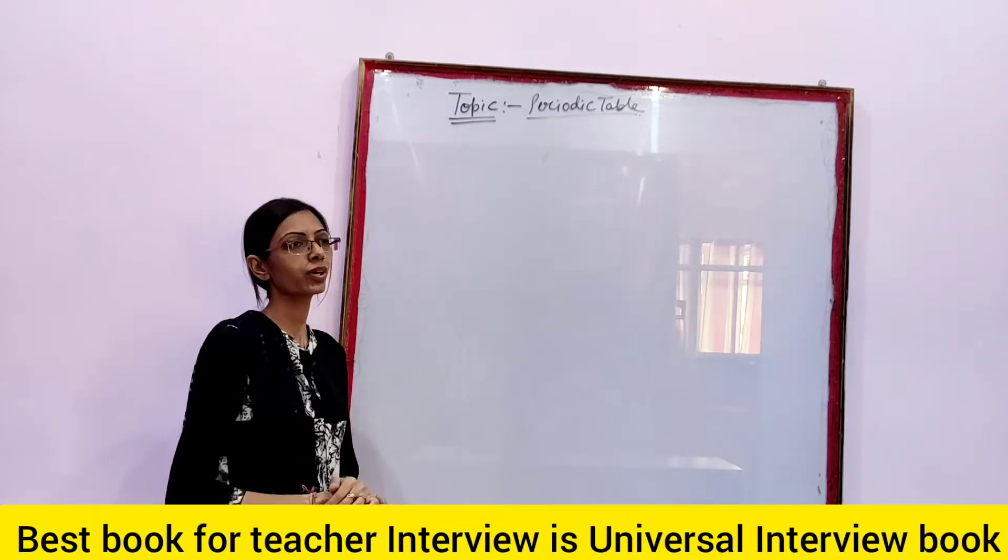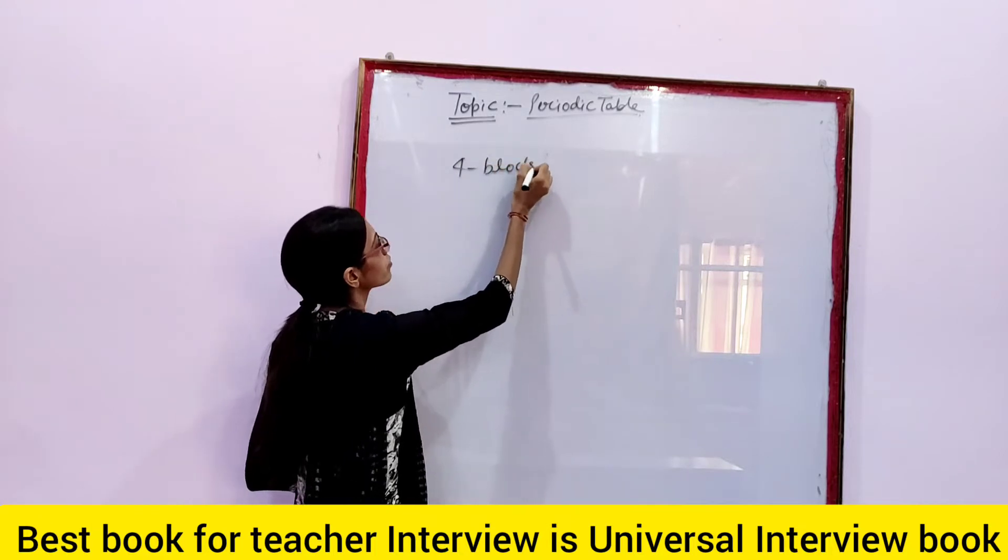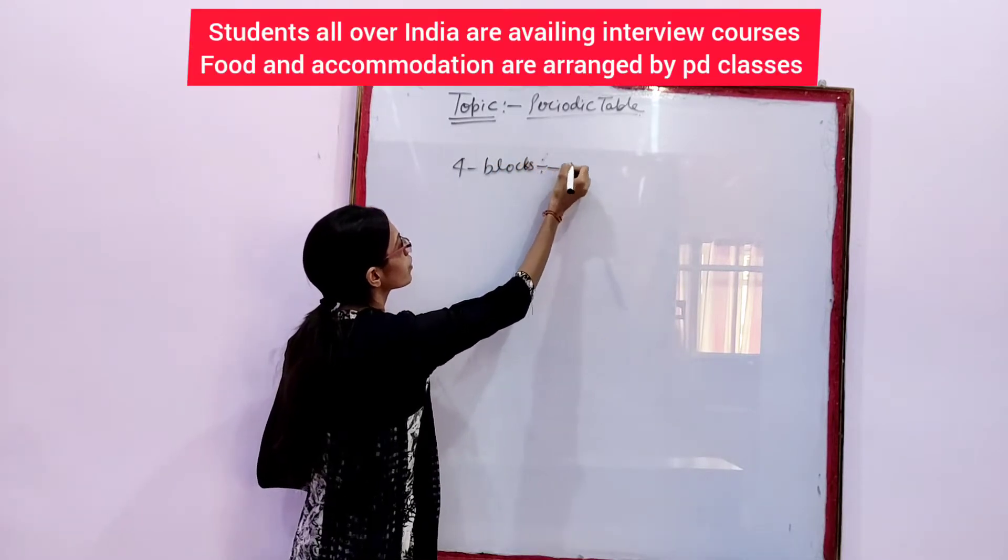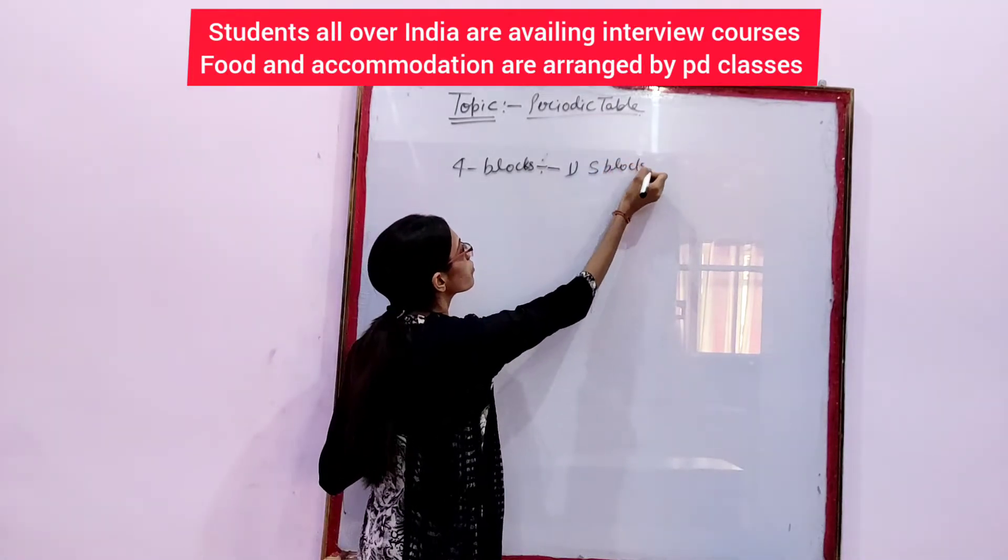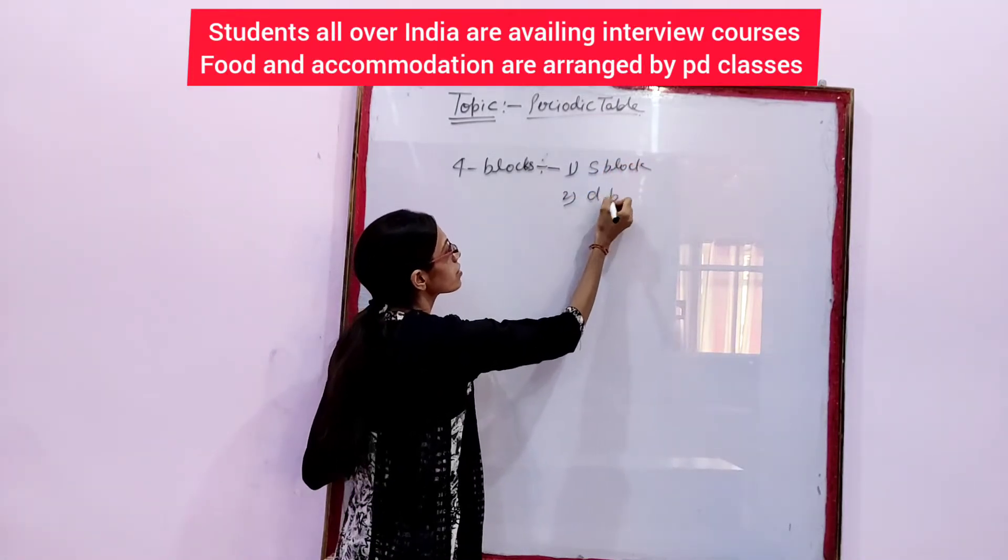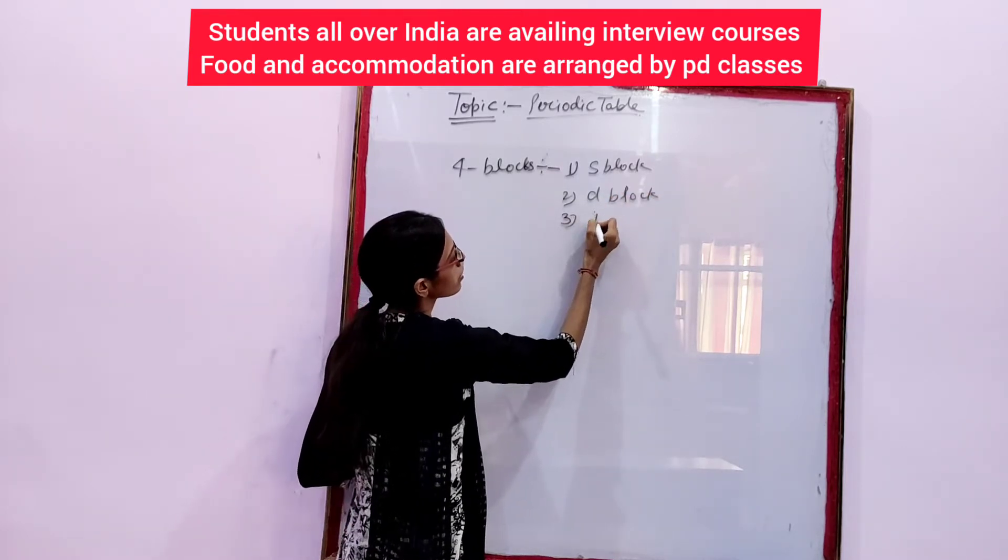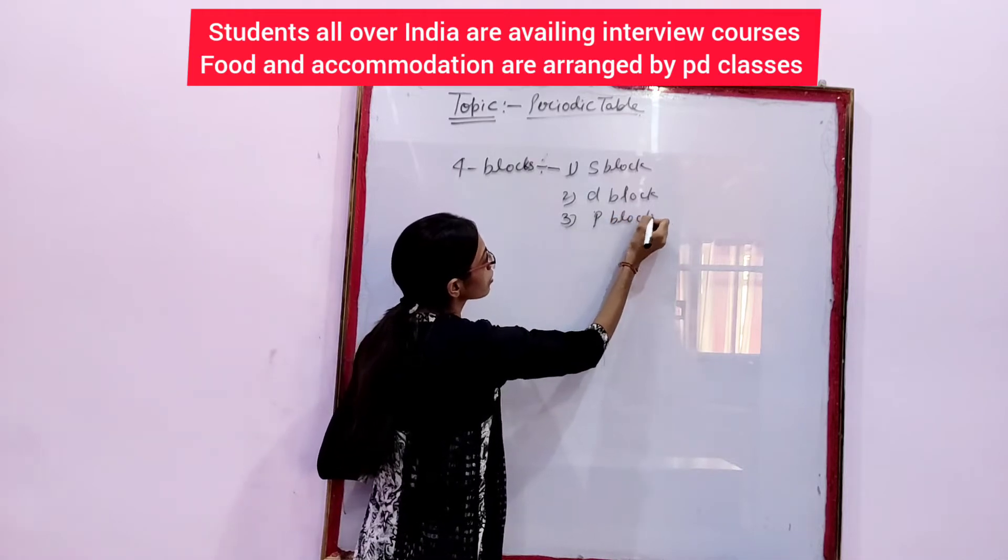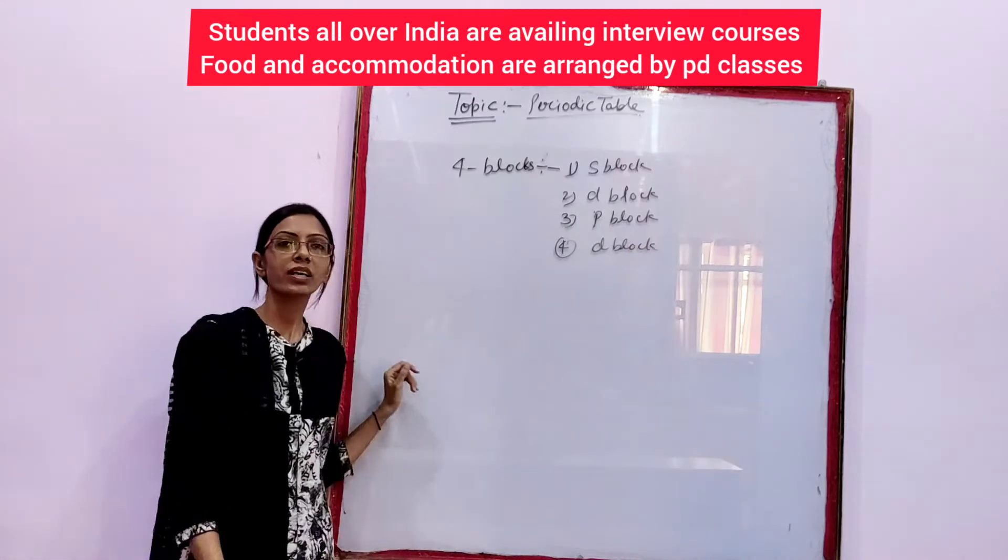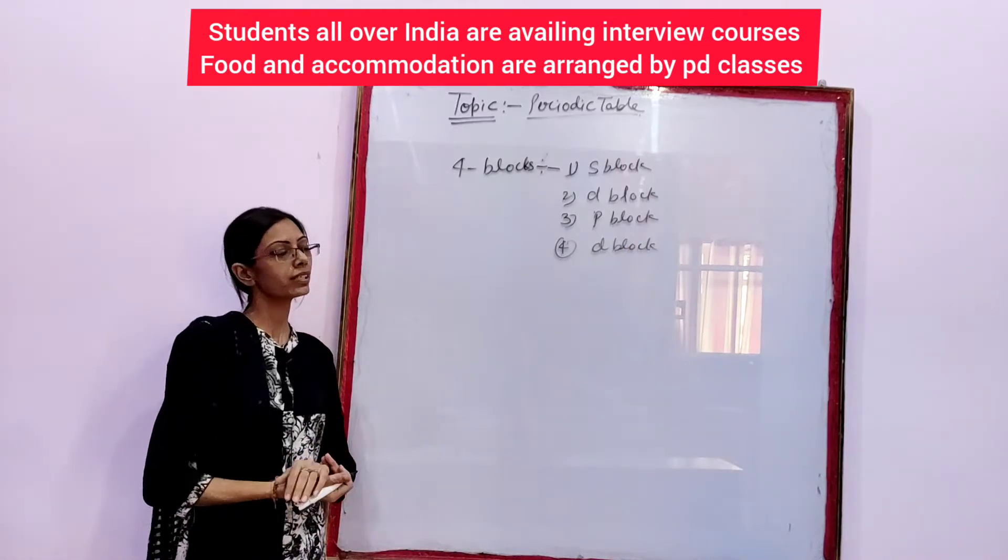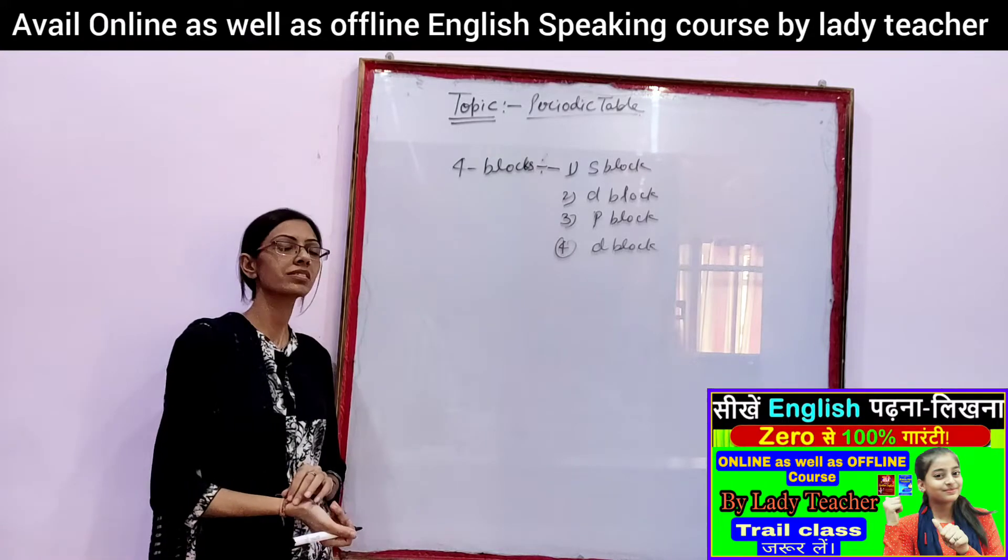Basically you know that the periodic table has 4 blocks. First is S block, second is D block, third is P block, and fourth is F block. And you know students, we have a total of 118 elements at present in the periodic table.